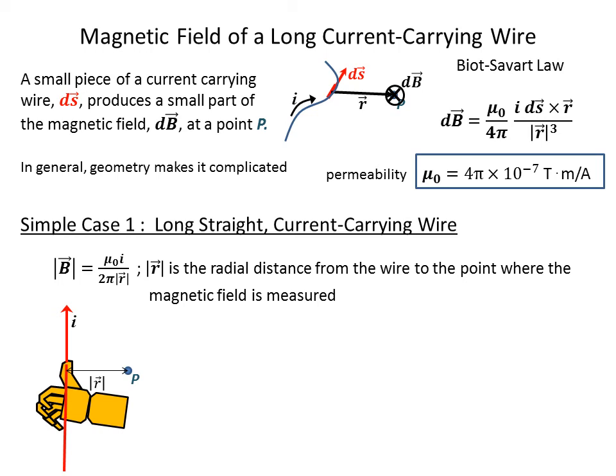The direction is given by the right-hand rule, so that you put your thumb in the direction of the current, your fingers curl around the wire, and you get this circular pattern of the B field.